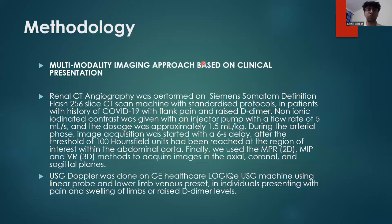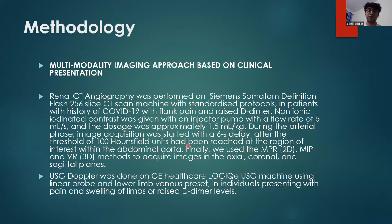We used a multi-modality imaging approach based on the clinical presentation of each patient. For example, if a COVID-19 recovered individual presented with flank pain and raised D-dimer levels, suspecting renal infarct, we performed renal CT angiography on a Siemens Somatom Definition Flash 256-slice machine. Non-ionic iodinated contrast was given via injector pump at approximately 1.5 ml per kg at a flow rate of 5 ml per second. Image acquisition during the arterial phase started with a 6-second delay after the threshold of 100 Hounsfield units was reached in the region of interest within the abdominal aorta. MPR, MIP, and VR methods were used to acquire images in axial, coronal, and sagittal planes.